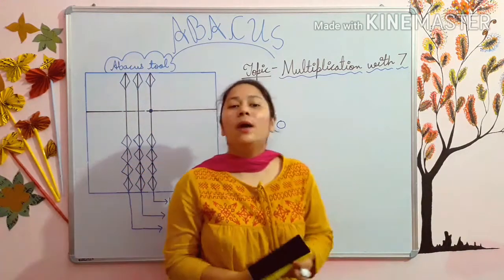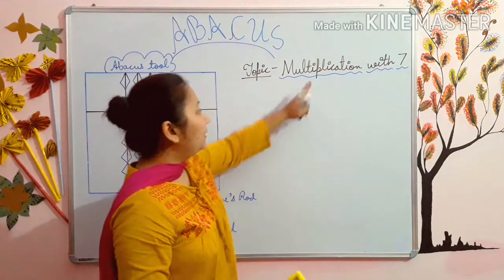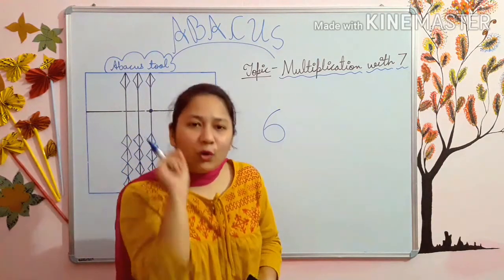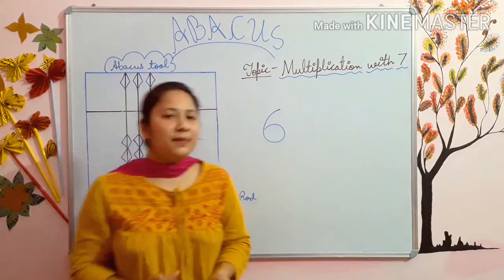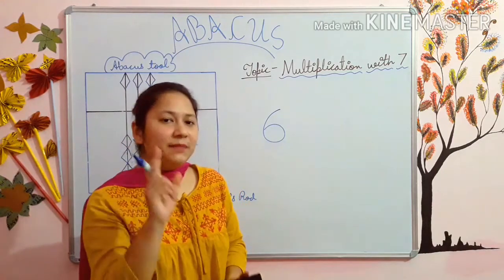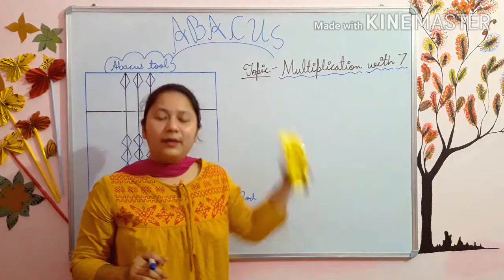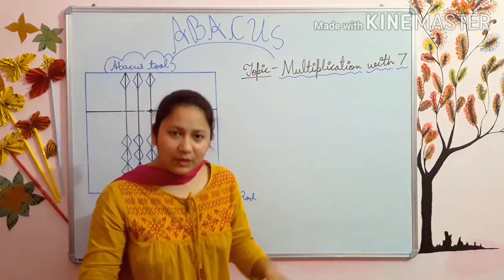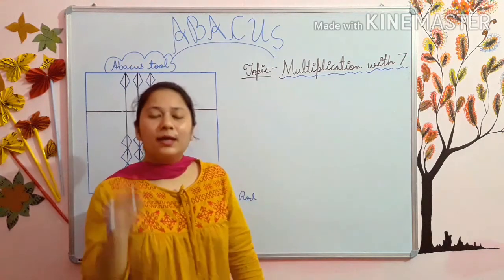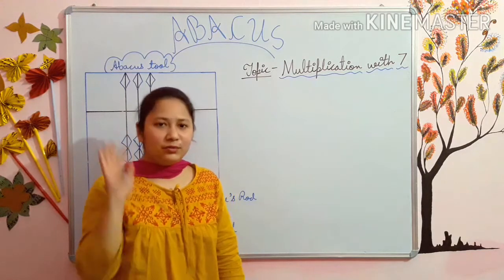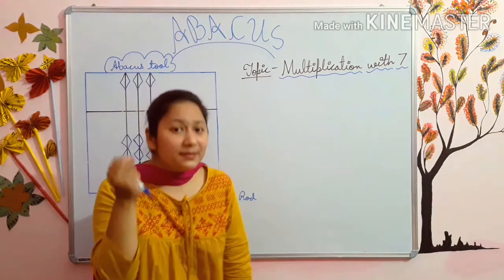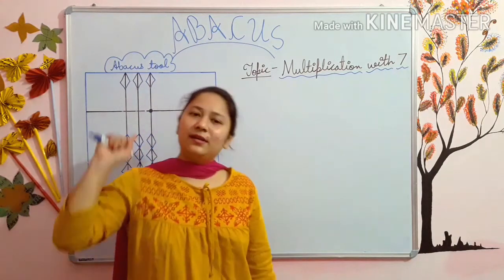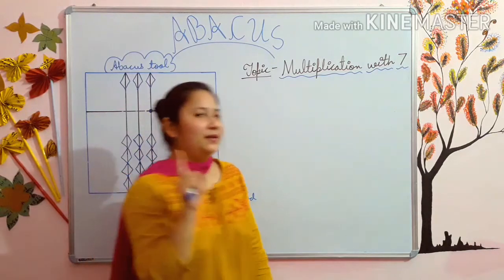So students, in my previous video we have learnt multiplication with six, and in that I have also told you about small friends. I think you remember, those who have seen my previous video. So today we will do normal sums in which small friends are not being used — we will do multiplication with seven in which small friends are not needed. Some sums are there in which you have to use small friends, but that topic we will take in our next video. So students, stay tuned to learn more.